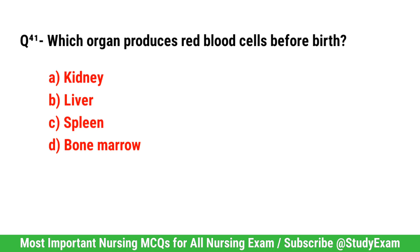Question number 41. Which organ produces red blood cells before birth? Right option is B. Liver.